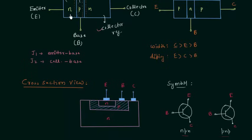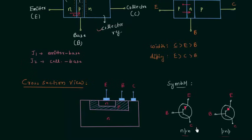In case of the NPN transistor, electrons move from N side to P side, so the direction of conventional current is from base to emitter. In case of the PNP transistor, electrons move from N to P, so the direction of current is from emitter to base — opposite to the NPN case. This is how we differentiate between the symbols of NPN and PNP transistors.